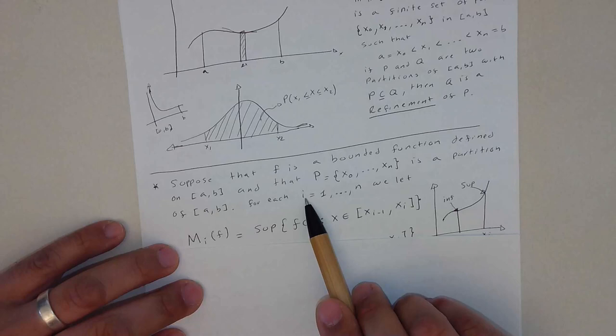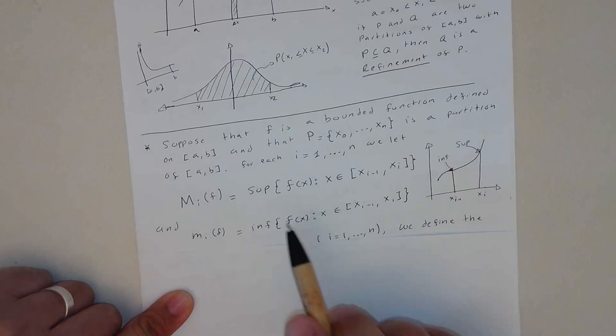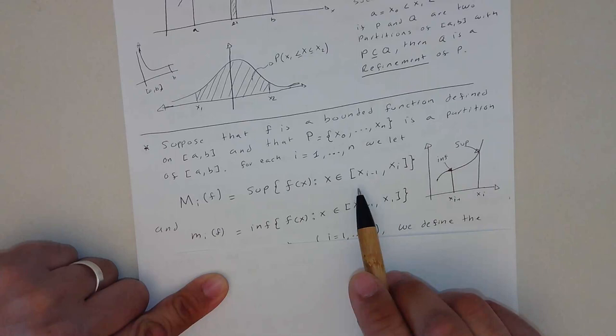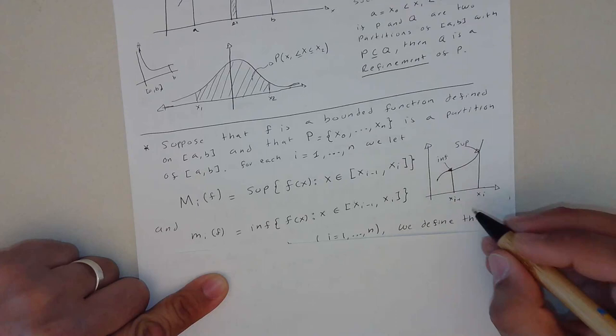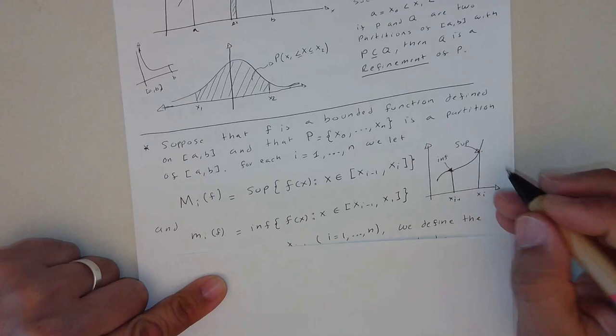So this is a bounded function defined between a and b, and the partition P is a partition also of this interval. For each i from 1 to n, we let, and now we have a new concept here: this capital M_i of the function F is the supremum value of the function F in this sub-interval created by the partition.